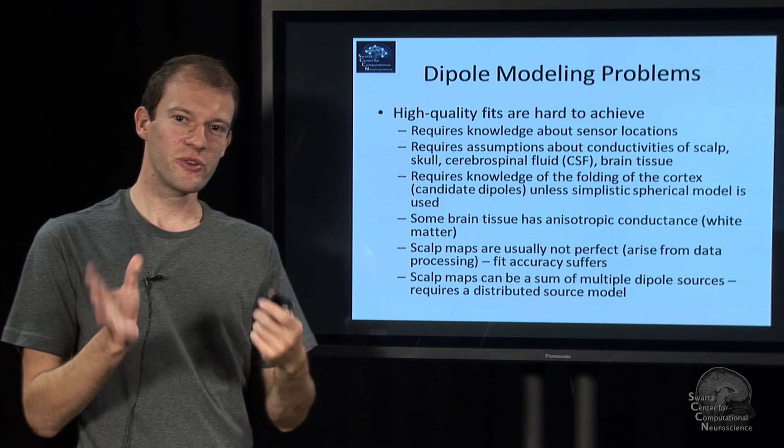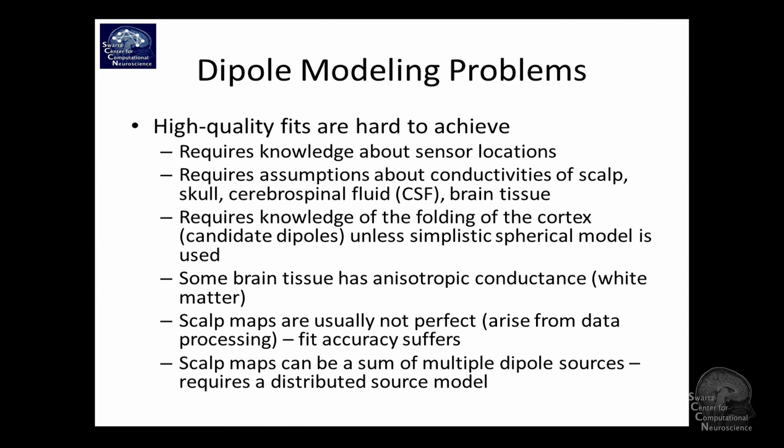I wanted to say what the issues with dipole fitting are. So one is what you need to know where your sensors are. If you don't know it very well, your dipole fits are going to be completely off. Another one is – it's really a big one. There's a few uncertainties about how conductive the skull is, how conductive the cerebrospinal fluid is, and the tissue and so on. And so if you get the parameters wrong and they change with age, for example, your fits might be too deep or too shallow or things like that.